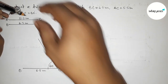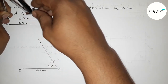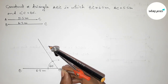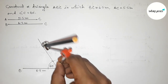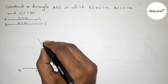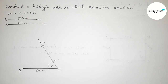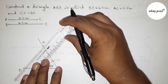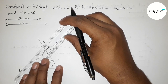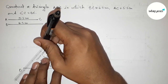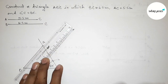Next, taking the length AC equals 5.5 centimeters with the compass. Putting the compass on point C and cutting the arc on the angle line to mark point A. Then joining side AB to complete triangle ABC.